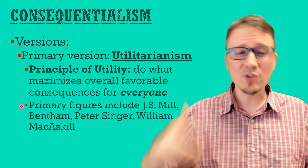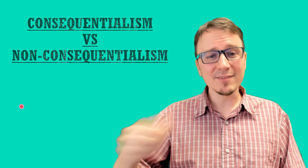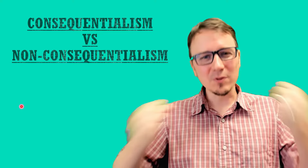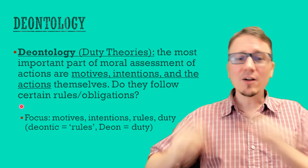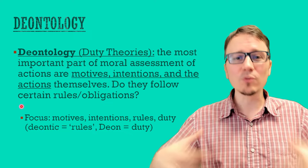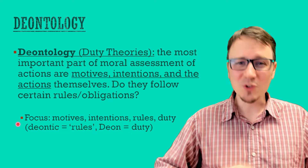Consequentialism is so influential on modern-day ethics that some philosophers say there are really only two main categories: consequentialism and non-consequentialism. Within non-consequentialism there are still pretty large categories, and the first one is deontology. Deontology, also sometimes called duty theories, claims that the most important part of moral assessment of actions is what comes before the action, or perhaps the action itself — whether it's following certain norms or rules. The etymology of deontology comes from the root of rules or duty, so the most important things to evaluate are motives, intentions, or reasons for action.